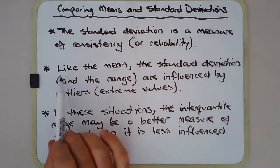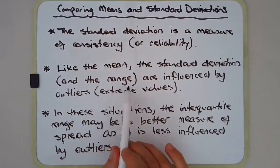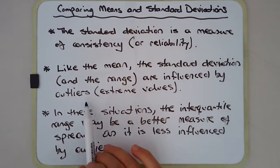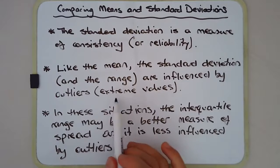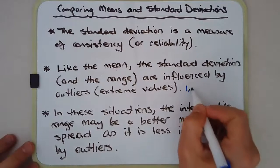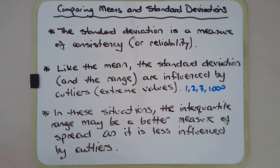Like the mean though, the standard deviation and the range are influenced by outliers, aka extreme values that are way off. So for example, one, two, three, one thousand—if you took the mean of these four numbers, the mean and median are going to be very different to each other.